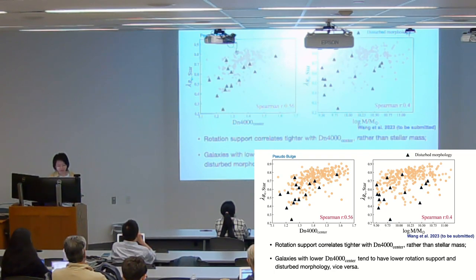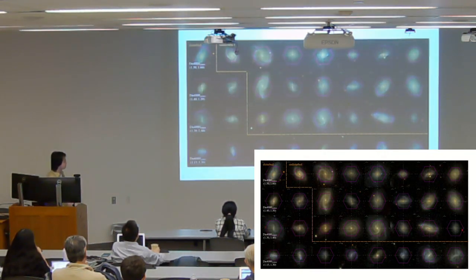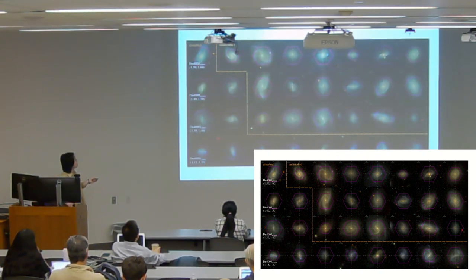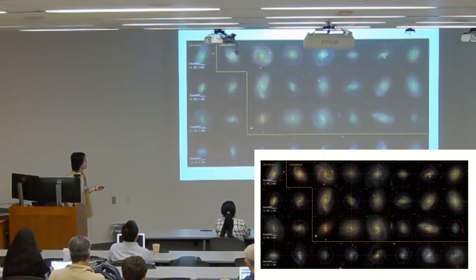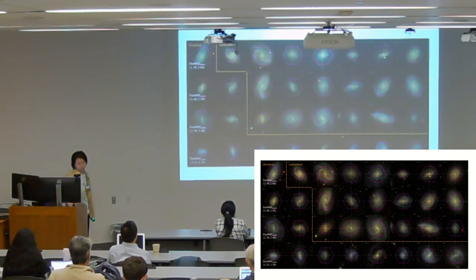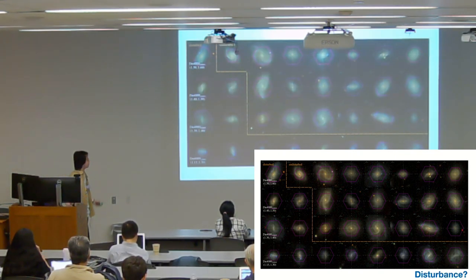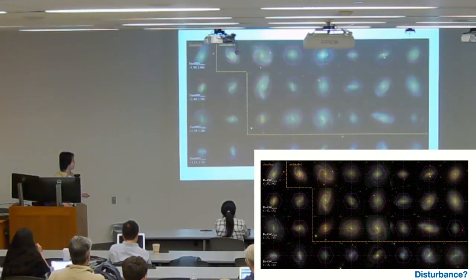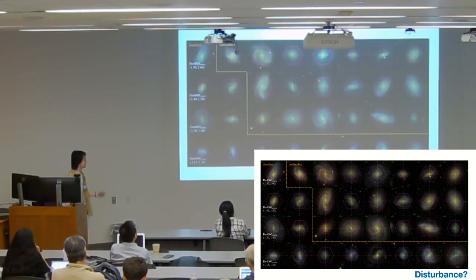We flag galaxies with disturbed morphology, and you can clearly see that the disturbed morphology mainly resides in the low lambda regions and hardly reaches the high-lambda sequence. Galaxies with lower d4000 in the center have lower rotation support and disturbed morphology, and vice versa. From a gallery of galaxy images, you can see that from bottom to top d4000 is increasing — galaxies on the left show disturbed morphology, and on the right are undisturbed. The bottom galaxies have quite asymmetric morphology, and as d4000 increases the morphology tends to settle out, suggesting these galaxies may have experienced perturbations such as mergers or instabilities.